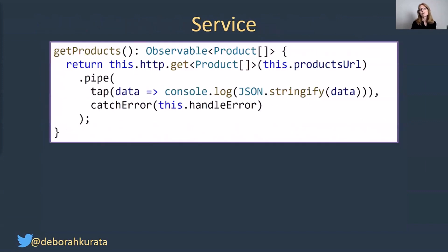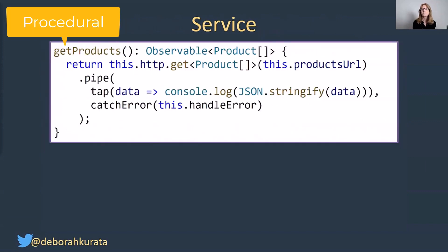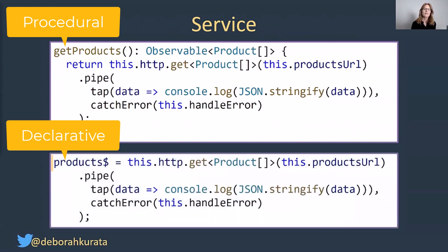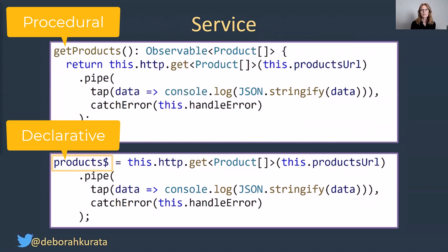But what if we thought about this differently? What if instead of using a procedure — our getProducts method — we instead declared a variable? So here we've got products$ in our service instead, and it's set to the exact same HTTP GET request. The $ sign indicates that what we have here is an observable and not the actual data itself — it's an observable of product array, not the product array.